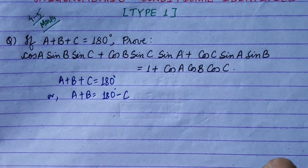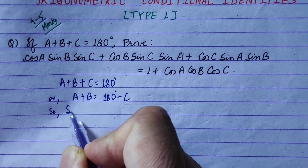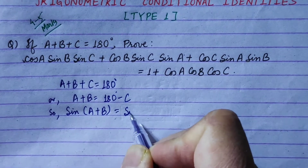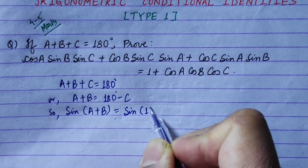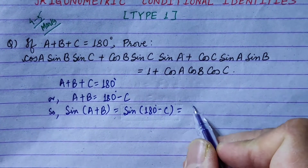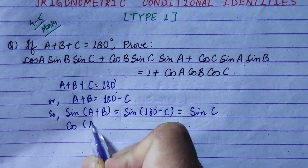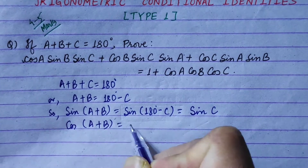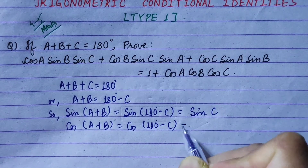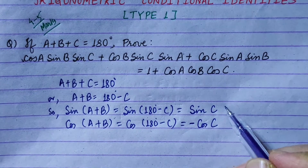Now we apply sin to both sides: sin(a plus b) equals sin(180 minus c), which gives us sin c. Next, cos(a plus b) equals cos(180 minus c). Since 180 minus c is in the second quadrant, cos is negative, so cos(a plus b) equals minus cos c.